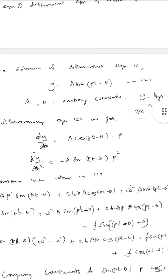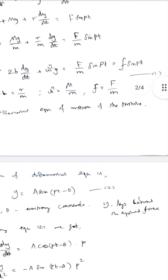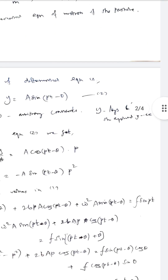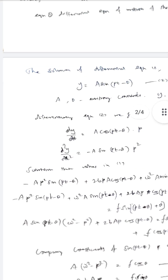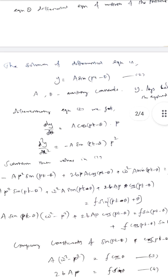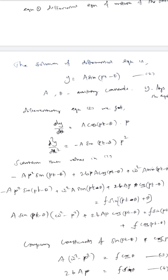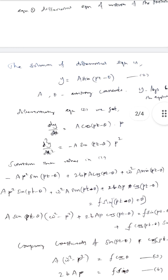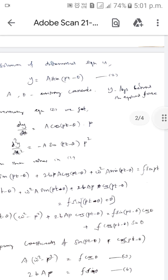Substituting back: d²y/dt² = −Ap² sin(pt − θ), and ω²y = ω²A sin(pt − θ). So we get −Ap² sin(pt − θ) + ω²A sin(pt − θ) + 2bAp cos(pt − θ) = f sin(pt). The right-hand side f sin(pt) can be written as f sin((pt − θ) + θ), so that we can equate terms.